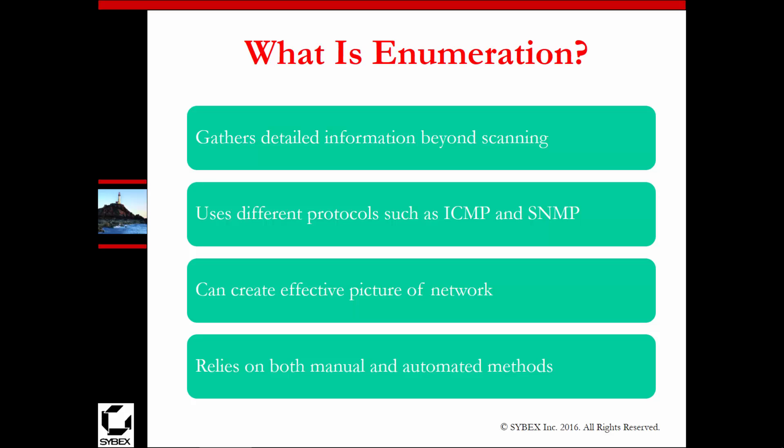Scanning uses ping and ARP and things like that, while enumeration also uses things like ICMP and SNMP. This helps to create a more effective overall picture of the network.